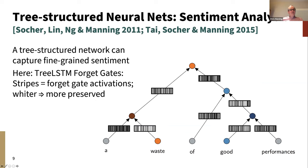So we wanted to construct neurosymbolic models. We worked for about five years on constructing tree-structured neural nets, where the representations of meaning at nodes were distributed neural representations, but for computing the meaning of larger linguistic units, we used a purely symbolic representation of sentence structure. This allowed us to do cool things like fine-grained sentiment analysis. Using a tree LSTM model — a tree generalization of LSTMs — the model could correctly work out that 'a waste' is negative, 'good performances' is positive, and when combined together, the result is positive.